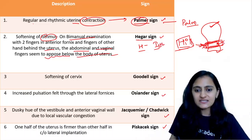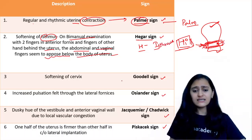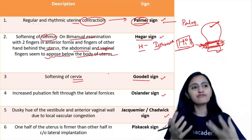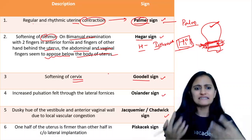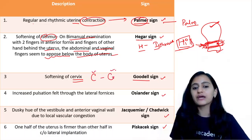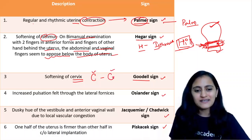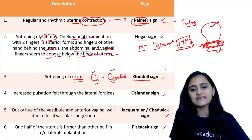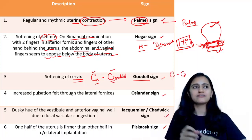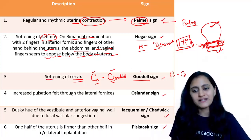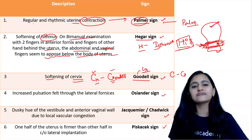Then we have Goodell sign — softening of the cervix. As we've seen in previous sessions, the letters C and G look similar and go together. So cervix softening is your Goodell sign. You can also remember it as: the cervix becomes 'goody goody' to feel, meaning the cervix becomes soft. So Goodell sign = cervix softening.